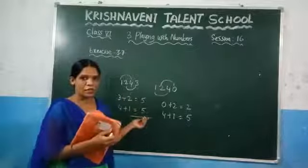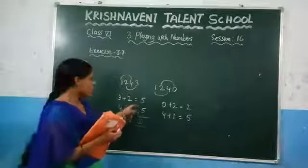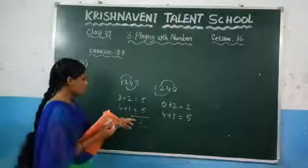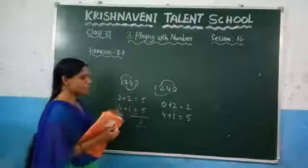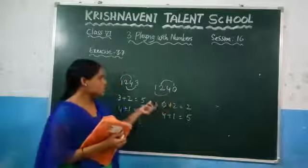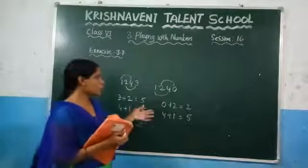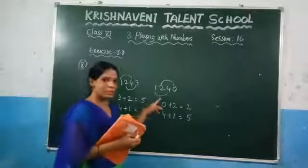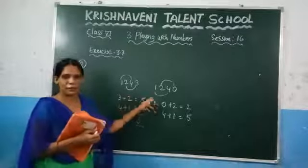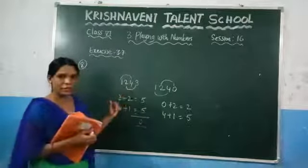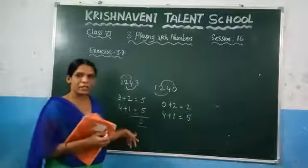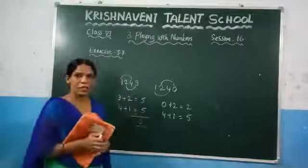The divisibility rule for 11 states you need to take the sum of the odd digits and the sum of the even digits, and after making the difference, you have to get the result as 0 or the number must be divisible by 11. Since you are getting the result as 0, we can say that this number is divisible by 11. They have given 1240 and said it is not divisible by 11. Adding 3 gives 1243, and after applying the divisibility rule, the result is 0, so 1243 is divisible by 11.